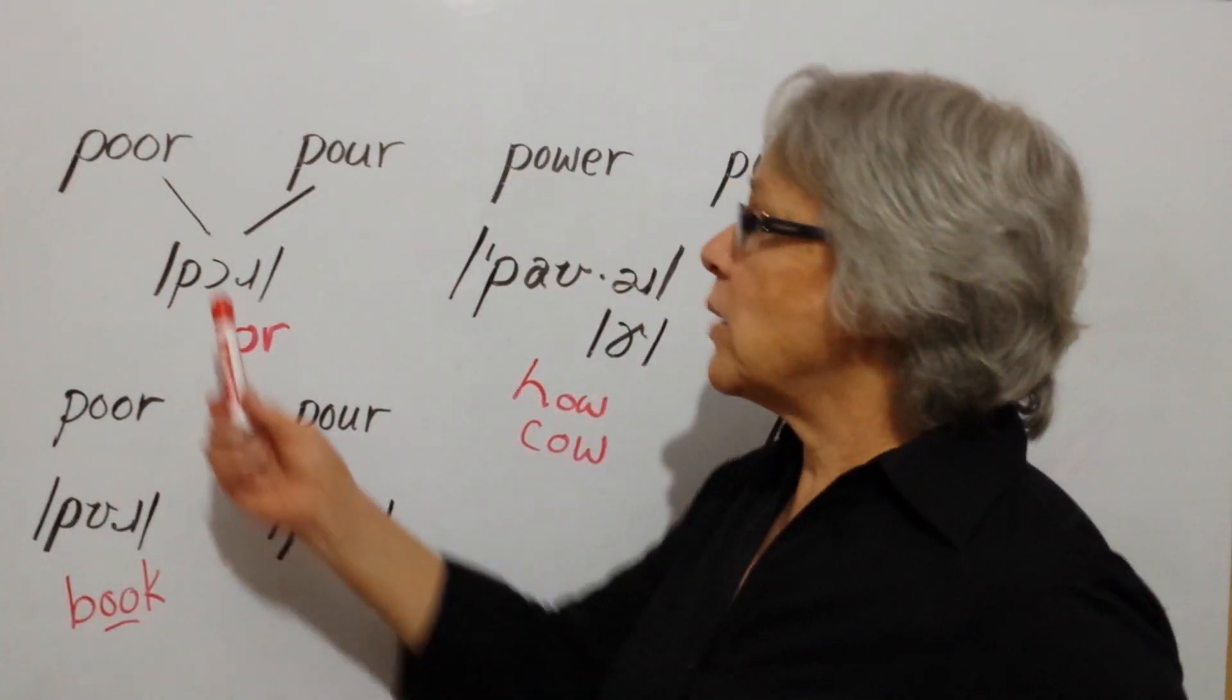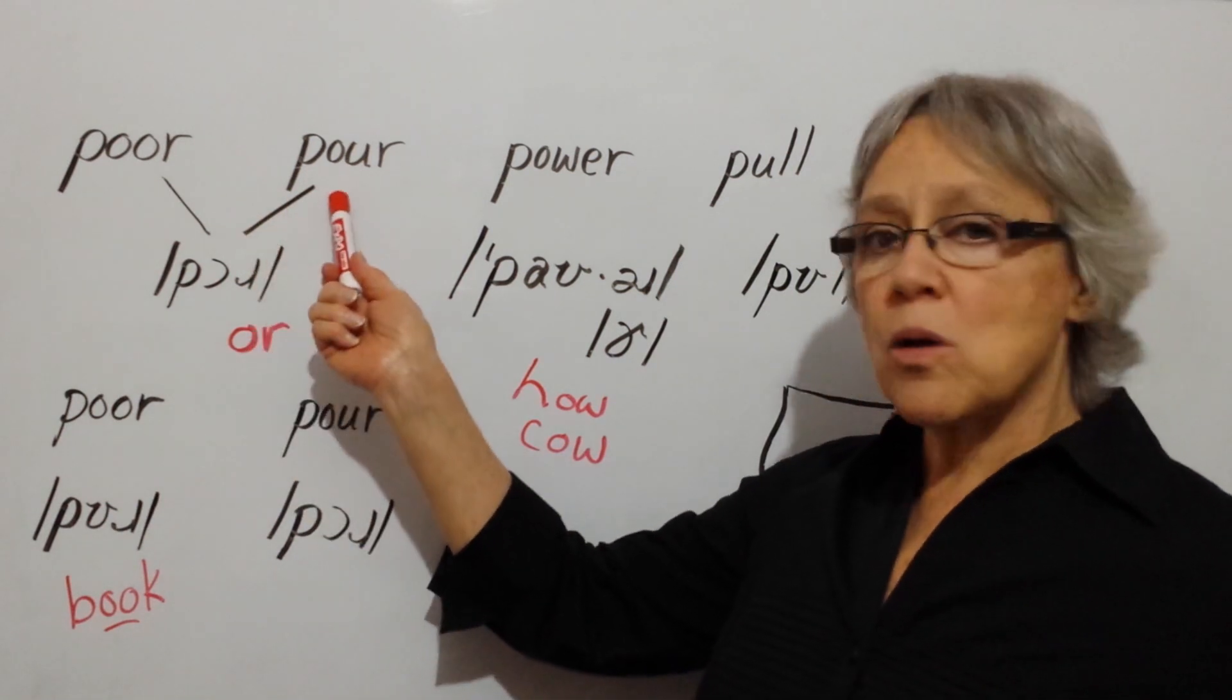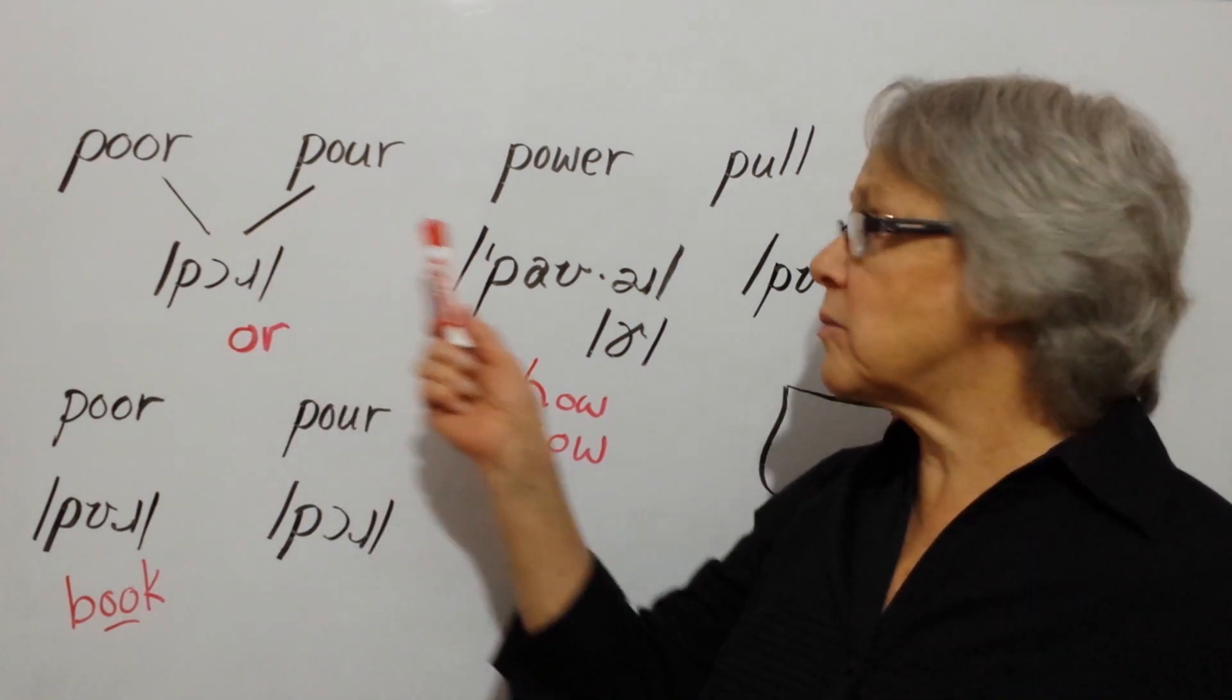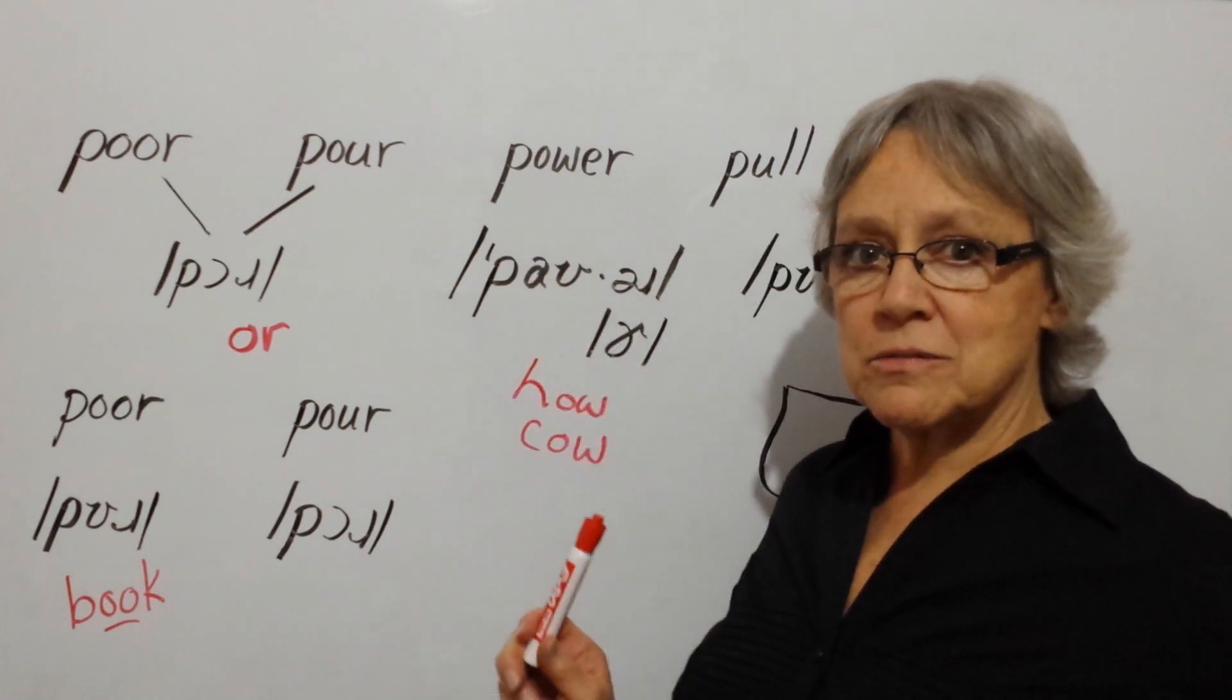So we have pour, one syllable, pour, one syllable, power, two syllables.